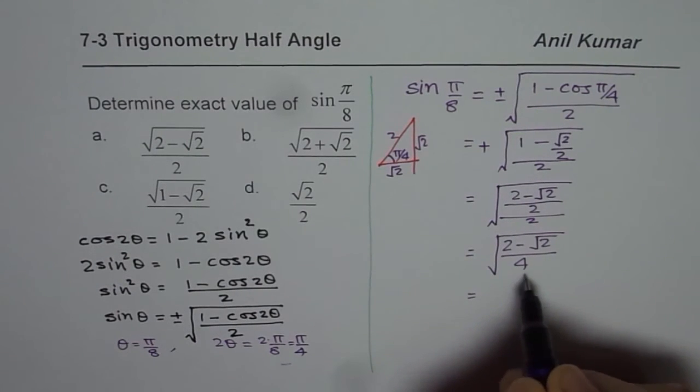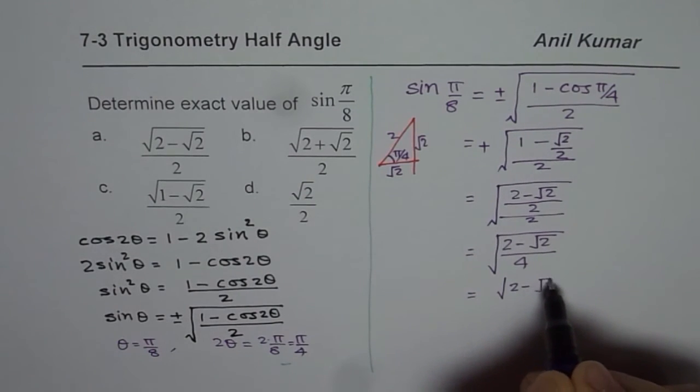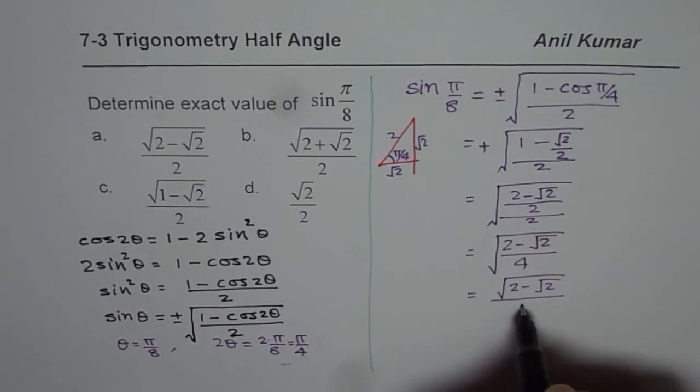And that is equal to, that 4 can be brought outside, so we can say, 2 minus square root 2, within square root, divided by 2.